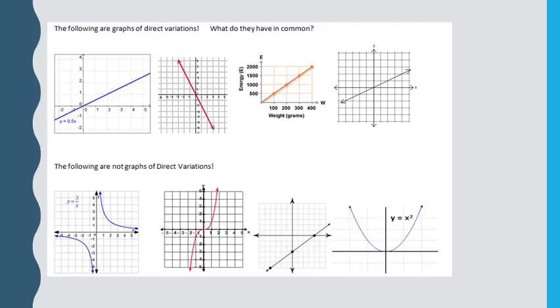So the following up top are the graphs of direct variations. Take a look and see what do they have in common. What do you think makes them a direct variation?